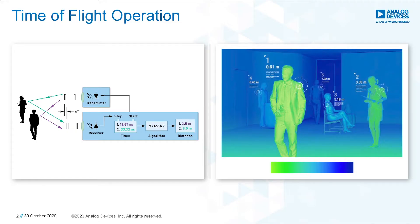Time-of-flight measures depth by illuminating a scene with a modulated light source, such as a laser, and a sensor to detect the reflected light from a target. The sensor measures the time delay between the light emitted and the received light. As the time delay is proportional to twice the distance between the camera and an object, you can calculate the depth to a target.